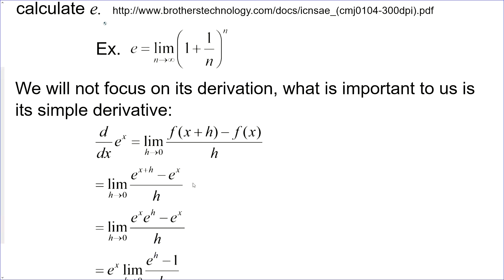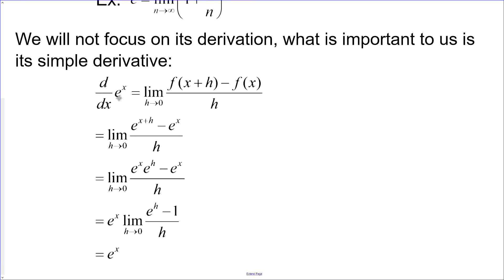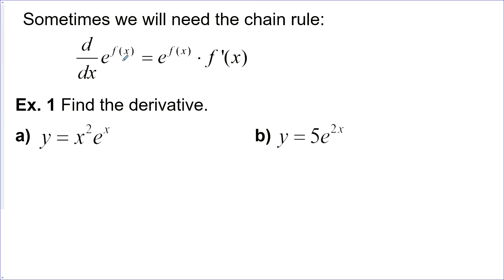What we're interested in is that if we have the derivative of e to the power of x, we go through those same steps as before, and now this limit does equal 1. So the derivative of e to the power of x is e to the power of x. And if we have a function in the exponent position, we'll have to use the chain rule: the derivative of e to the power of f(x) is e to the power of f(x) times the derivative of f(x).